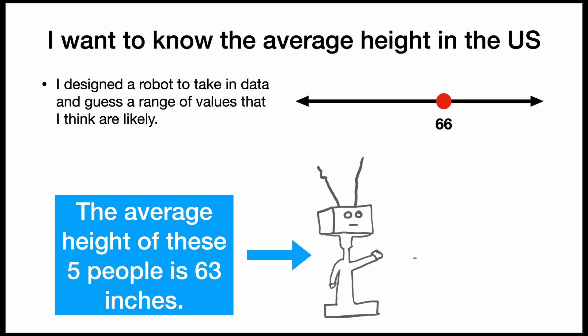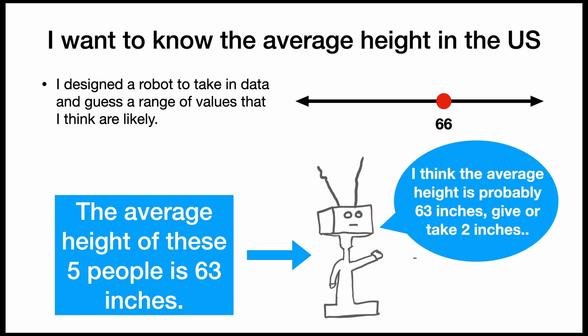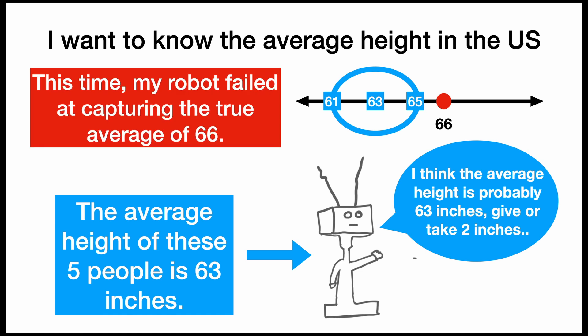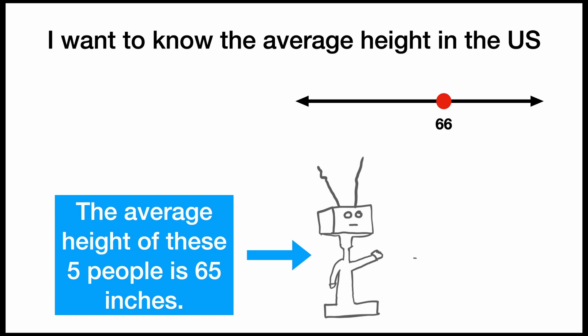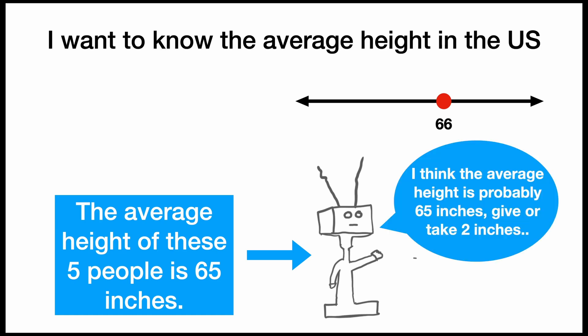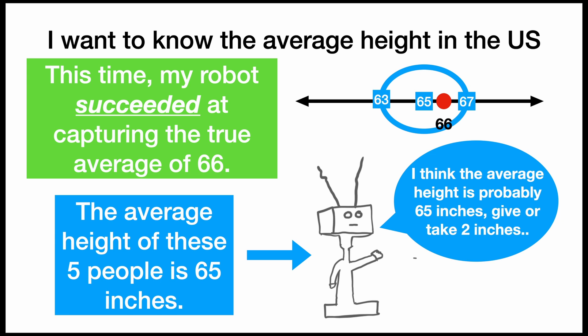If I see that the average height of five people is 63 inches, I might think that the average height is probably 63 inches, give or take 2 inches, and I make an interval. This time, my robot failed at capturing the true average of 66. After taking another sample, the average height of these other five people was 65 inches. The robot thinks the average height in the U.S. is probably about 65 inches, give or take 2 inches. This time, the robot succeeded at capturing the true average of 66.